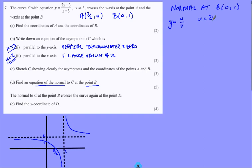So u, 2x minus 3, v, x minus 3. du dx is 2, dv dx is 1. And using the quotient rule, dy dx, v du dx minus u dv dx.